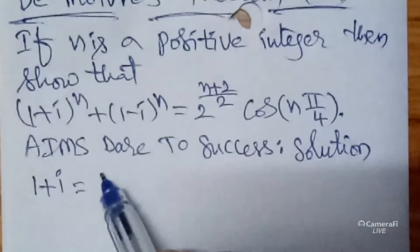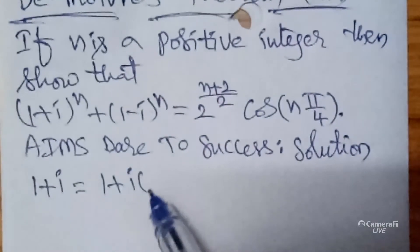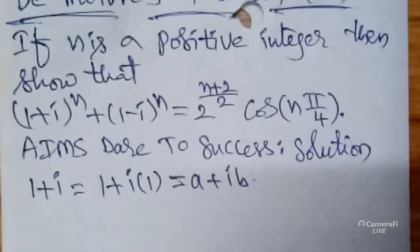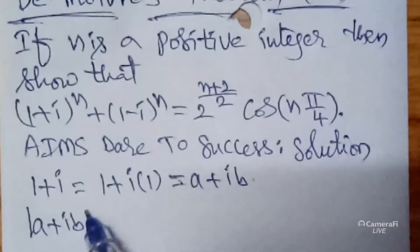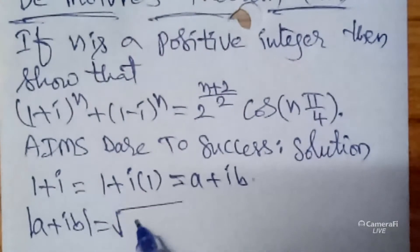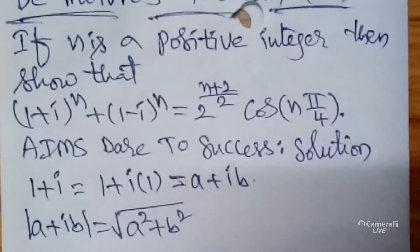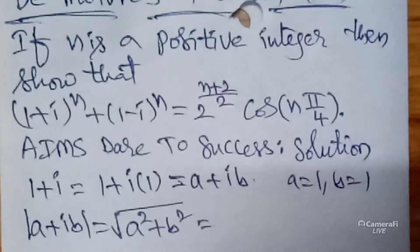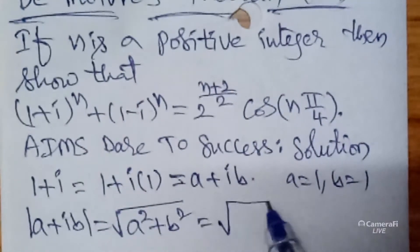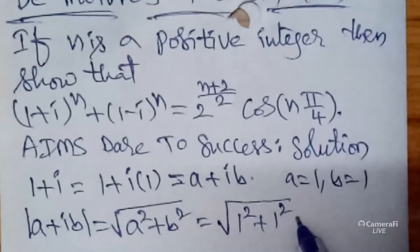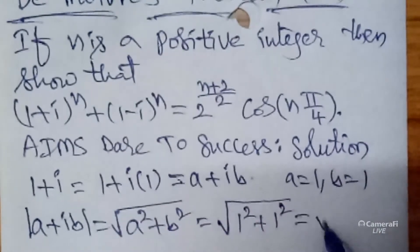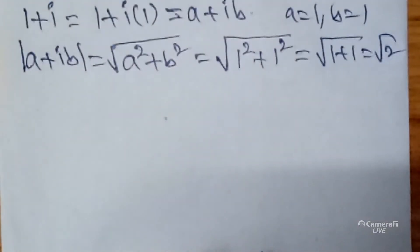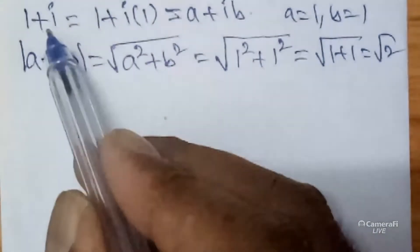One plus i — this can be written as 1 plus i, which is in the form of a plus ib. To find the modulus of a plus ib, the formula is root over a squared plus b squared. Here a is 1 and b is also 1, so this can be written as root of 1 squared plus 1 squared, equals root of 1 plus 1, equals root 2.